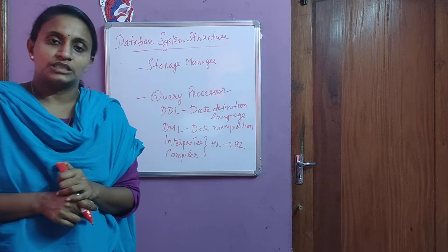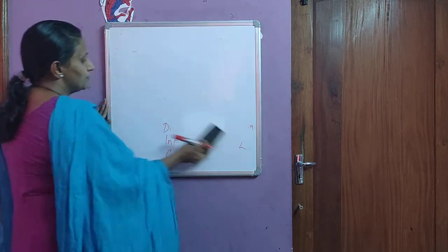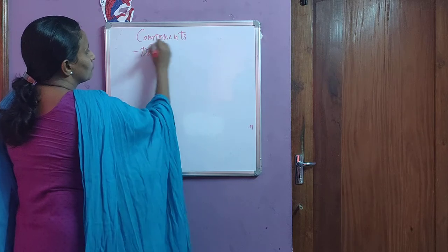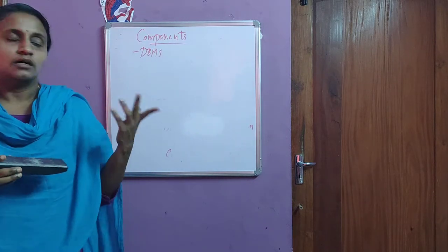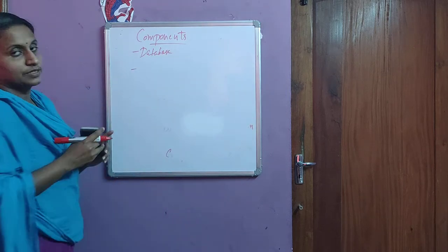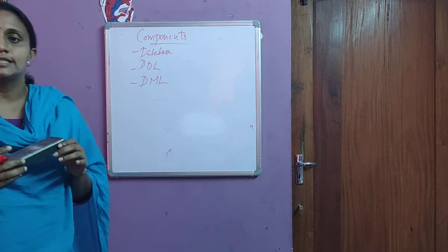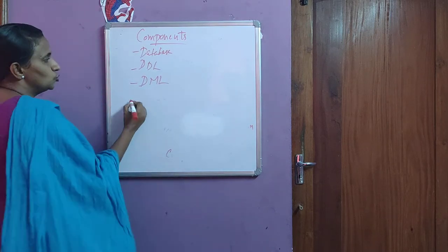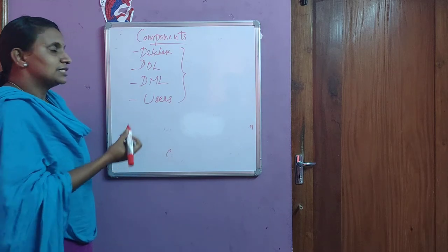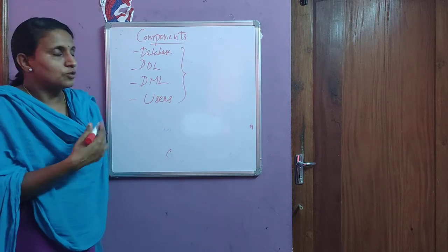Next, we discuss the components of DBMS. The first component is the database itself — the collection of data. The second component is DDL, data definition language. The third component is DML, data manipulation language. And the fourth component is users. So these four categories make up the components of a database system.